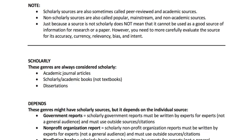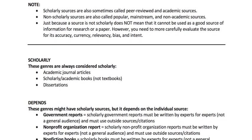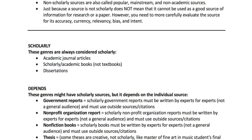Scholarly sources are sometimes called peer-reviewed, academic, or refereed sources. Non-scholarly sources are also called popular, mainstream, or non-academic. Just because a source is not scholarly does not mean it is not a good source of information or that it can't be used in a college-level research paper. It just means you need to more carefully evaluate the source for accuracy, currency, relevancy, bias, and intent — whereas you can be a little less concerned with those when looking at academic sources.